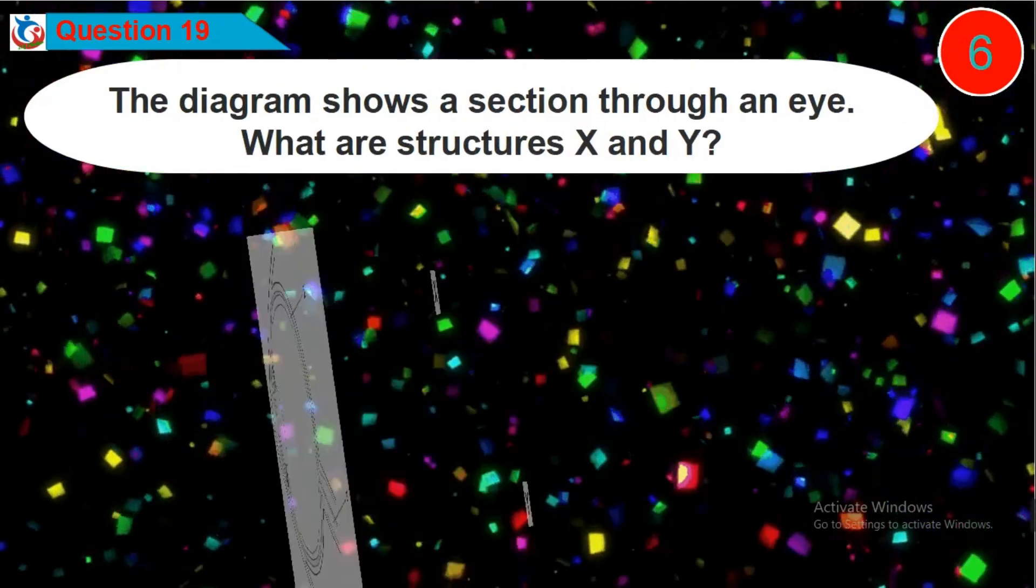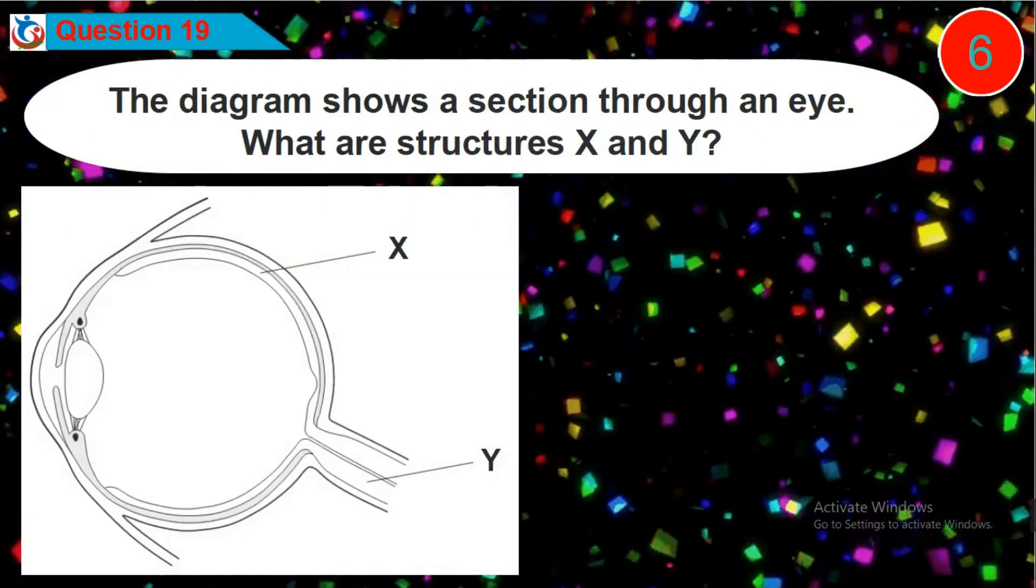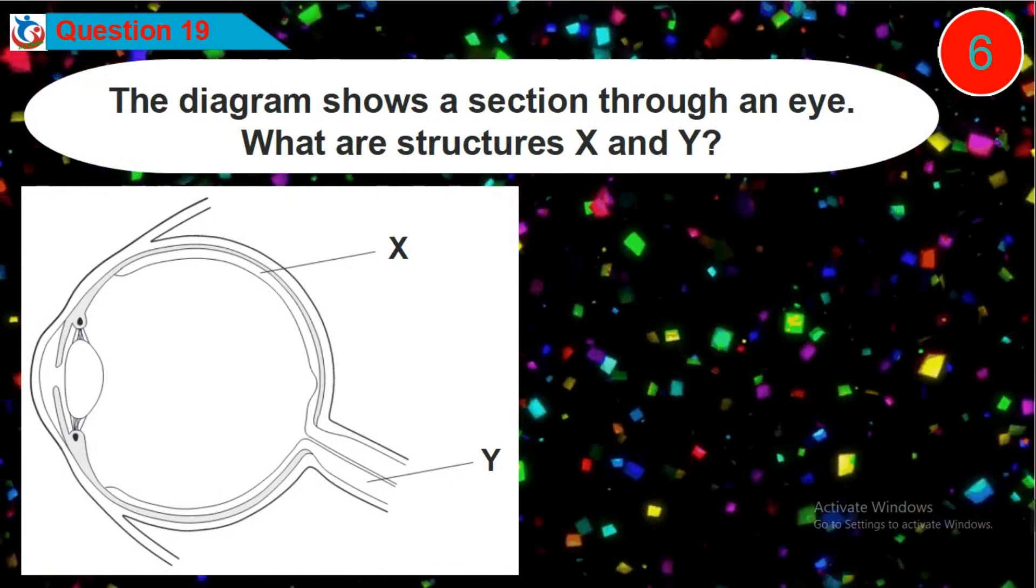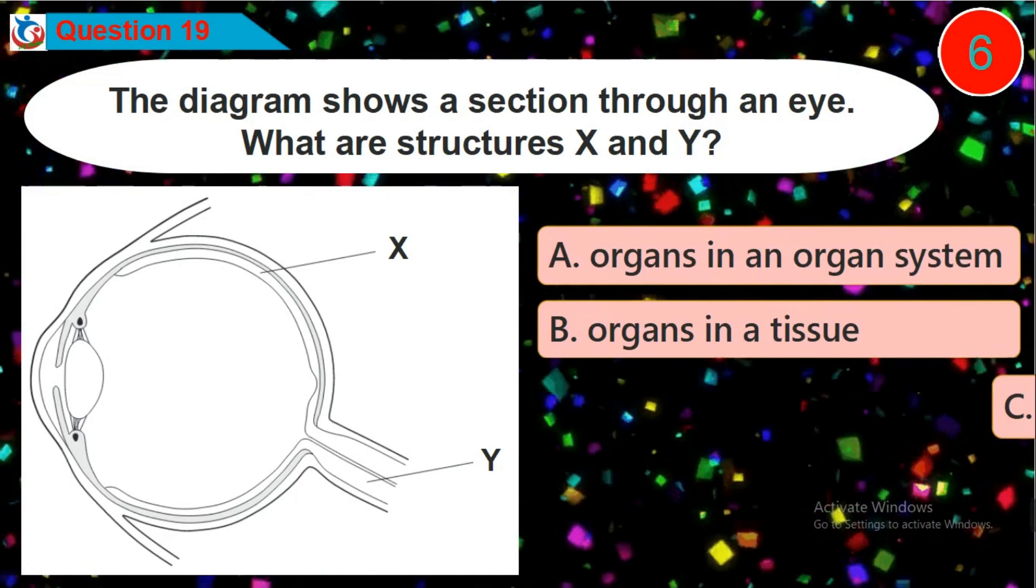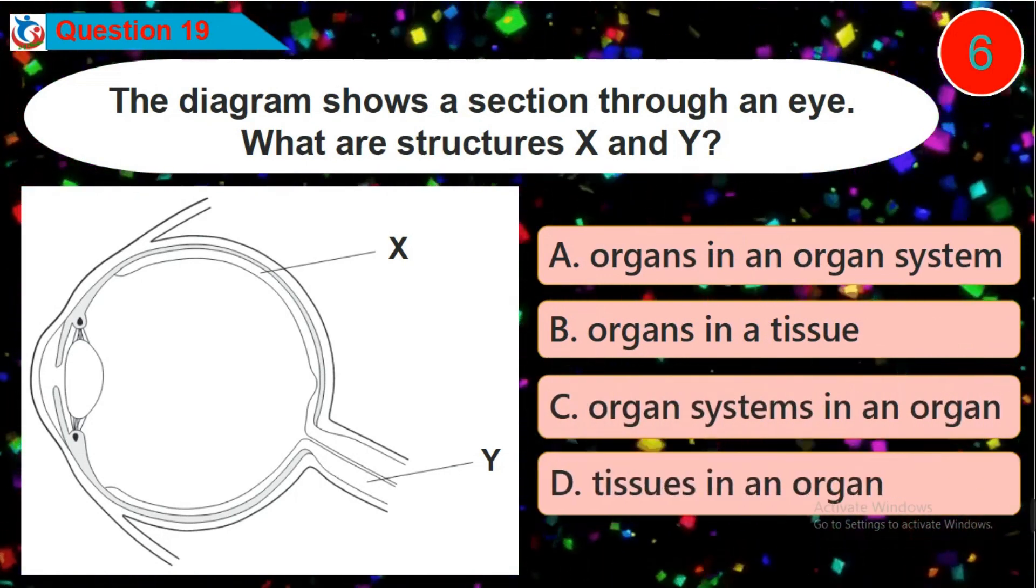Question 19. The diagram shows a section through an eye. Is it option A, B, C or D?